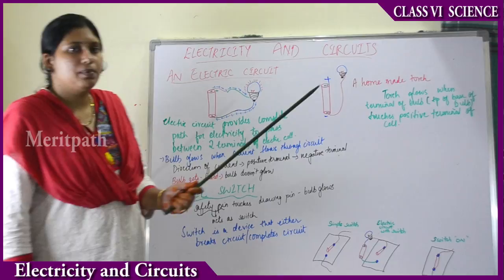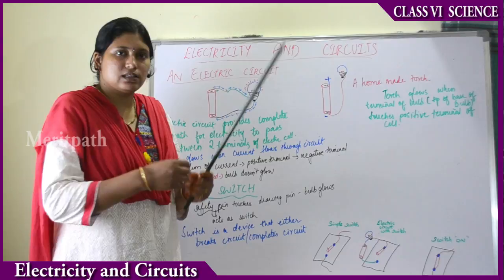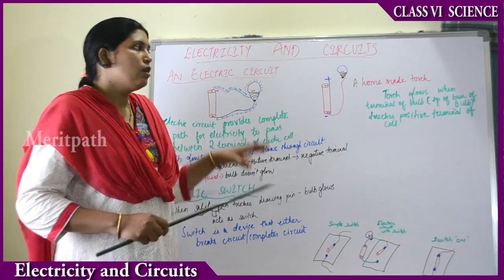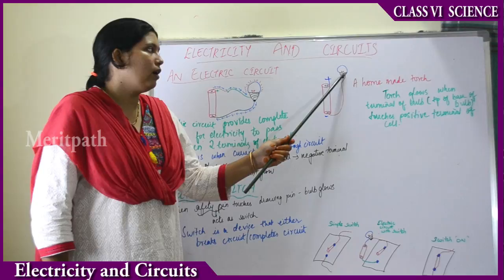Next, you can make a simple homemade torch. Take a cell — it has a positive terminal and a negative terminal. From the negative terminal, take a plastic wire and cut the ends so that the inside metal part is exposed. In any circuit connection, always cut the ends of the plastic wires to expose the inside metal wire.